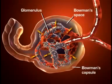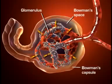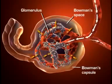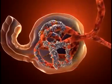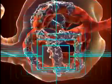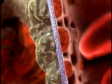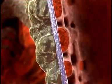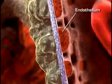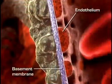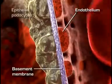The space inside the capsule and surrounding the glomerulus is called Bowman's space. Plasma-like fluid is filtered from the capillary blood into Bowman's space through the glomerular filtration membrane. The glomerular filtration membrane consists of three layers of capillary wall: the endothelium, the basement membrane, and the epithelium.